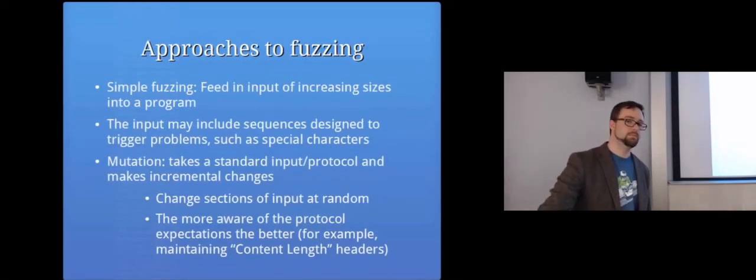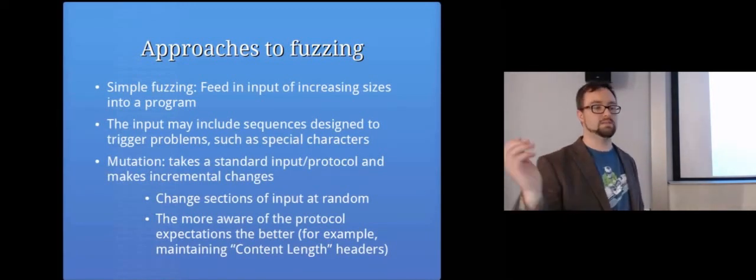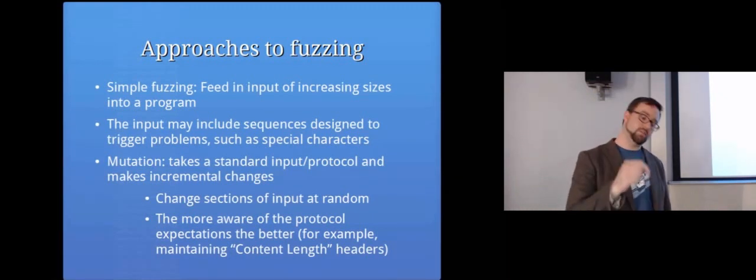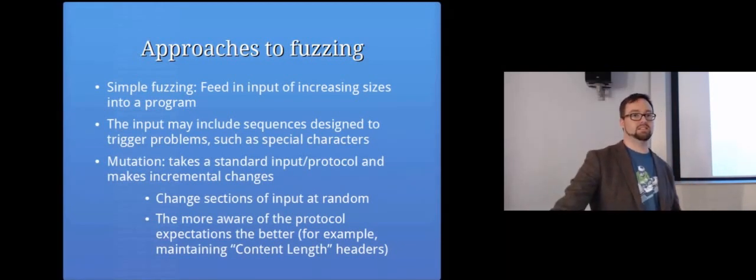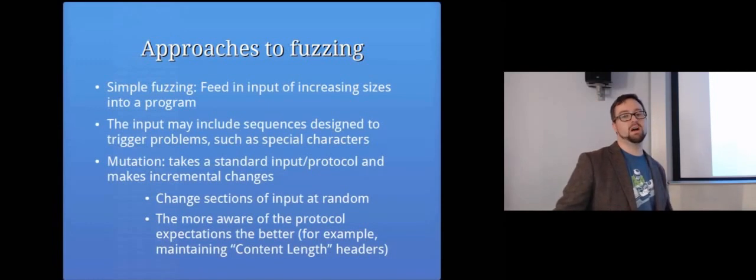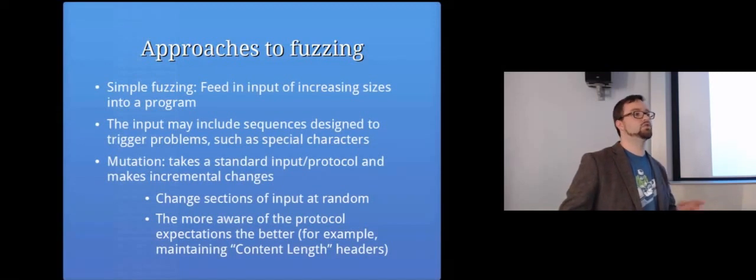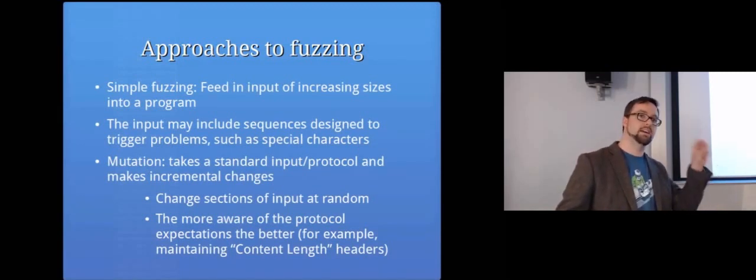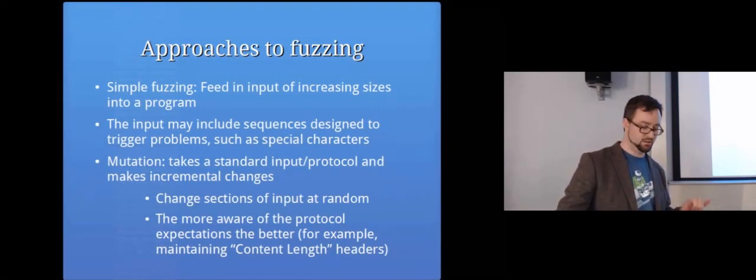So there's a few approaches to fuzzing. The simplest approach is just to feed in something of increasing length. So if it asks me for some input and I press A and enter, and then I run it again and press AA and enter, and I just basically keep feeding it more and more information. That's a simple form of fuzzing, just to see what happens when it gets loads of information. But also we might want to include other sequences of information that's designed to trigger problems. For example, I might include a semicolon because if there's a command injection attack, that could trigger it. Same with like SQL injection attacks, I might try like an inverted comma. Percentage signs and things like that. So I'll try all sorts of different inputs that are likely to cause a problem.